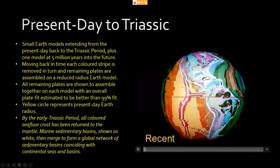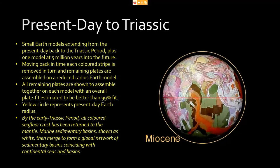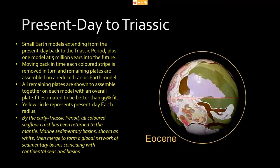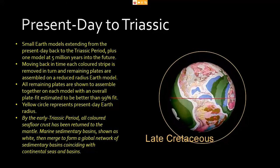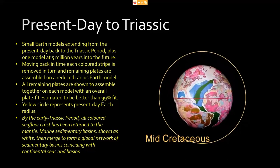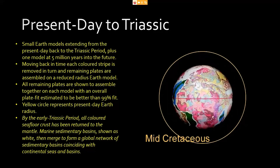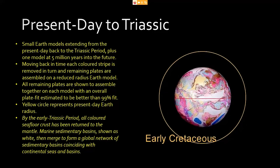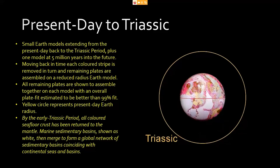In contrast to constraining plate assemblages to the Atlantic Ocean only, the small earth models in this animation will rotate once before removing each colored seafloor stripe in turn and reassembling the remaining plates together on a smaller radius earth model. This represents a unique method of modeling and constraining this geological mapping data. This animation simulates returning the intruded seafloor lava, as well as a proportion of the atmospheric gases and seawater from each of the oceans, back to the mantle. By doing this, each of the continents are moved closer together, in effect reverse-engineering the preserved plate growth history back in time. The remaining crustal plates assemble together on each successive model with a unique fit estimated to be better than 99 percent.